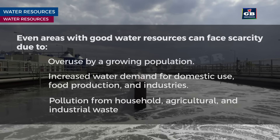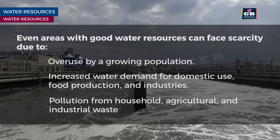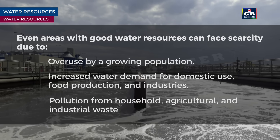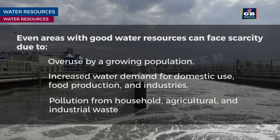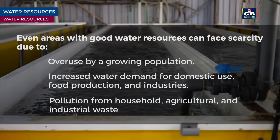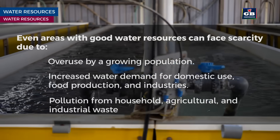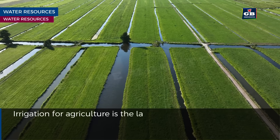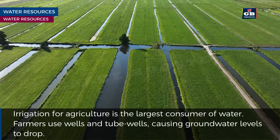Even areas with good water resources can face scarcity due to overuse by a growing population, increased water demand for domestic use, food production and industries, and pollution from household, agricultural and industrial waste. Irrigation for agriculture is the largest consumer of water.